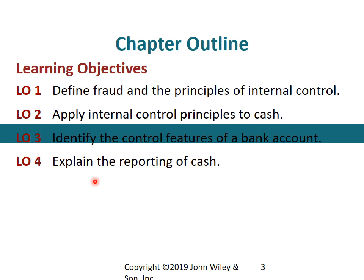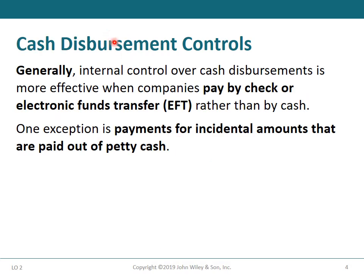We will study the third objective: identify the control features of a bank account. Cash disbursement control, objective number four: generally explain internal control reporting of cash. Cash control is more effective when companies pay by check or electronic fund transfer rather than by cash. One exception is payments for incidental amounts paid out of petty cash.